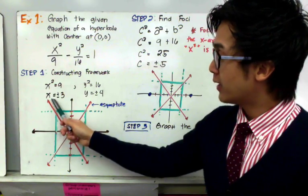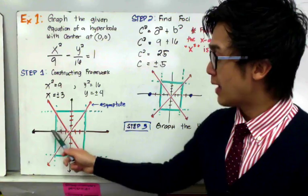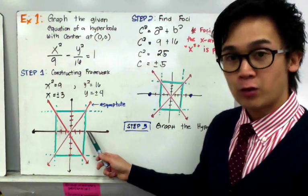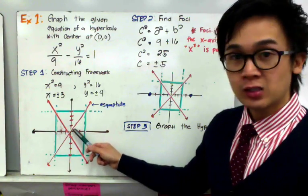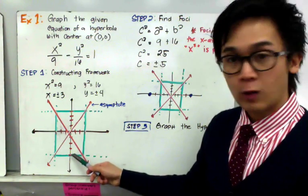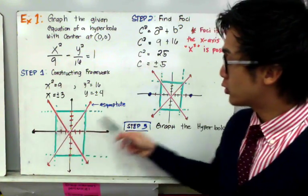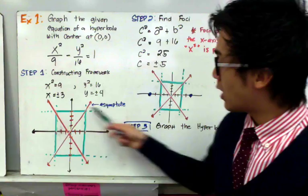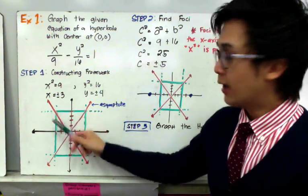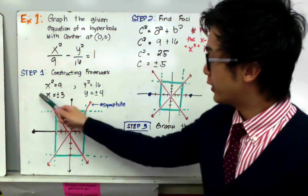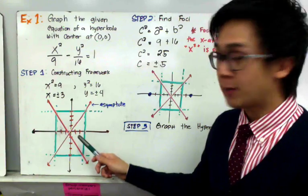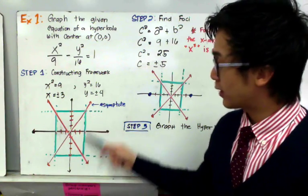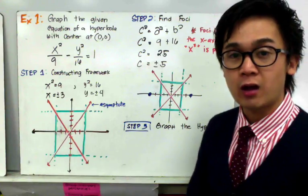Along the x-axis, there is a 3-unit distance away from the center going left and right — 3 units to the left and 3 units to the right. For the y-axis, I have 4 units up and 4 units down, creating a quadrilateral when I construct my framework. Along the x-axis I draw a vertical line, and along the y-axis I draw a horizontal line. The intersections help us find the asymptotes, or the diagonals, of your hyperbola, which determine how much the hyperbola opens in our x-y plane.